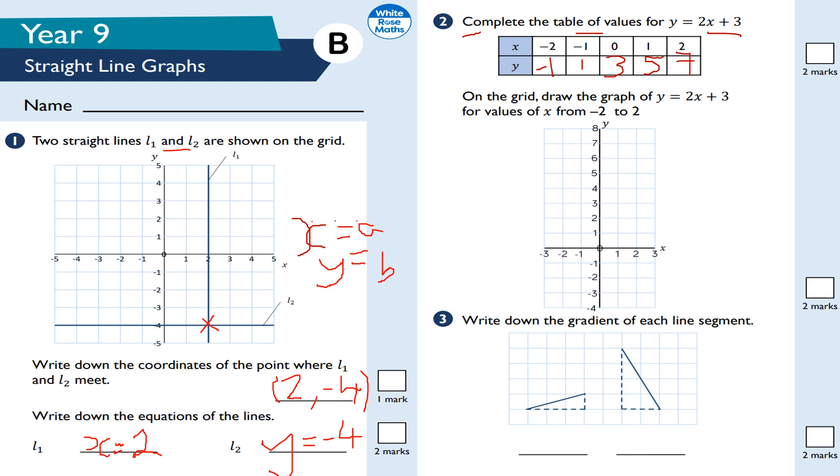On the grid, draw the graph of y equals 2x plus 3 for values between minus 2 and 2. So minus 2, minus 1, put a little cross there. Minus 1, 1. Zero, 3. One, 5. And 2, 7. With a ruler and a pencil, join a straight line. There we go.